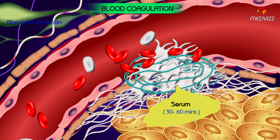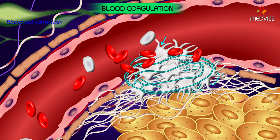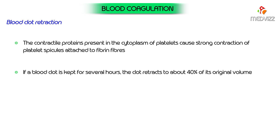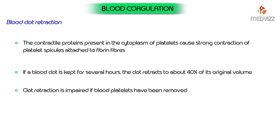Within 30 to 60 minutes, platelets are essential for clot retraction. The contractile proteins present in the cytoplasm of platelets cause strong contraction of platelet spicules attached to fibrin fibers. If a blood clot is kept for several hours, the clot retracts to about 40 percent of its original volume. Clot retraction is impaired if blood platelets have been removed.